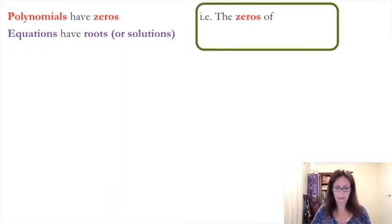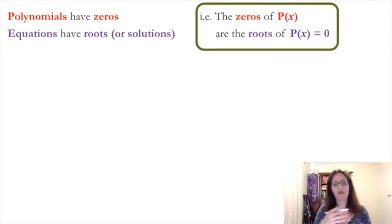So thinking about what a zero means, if something is a zero, what could that possibly mean it does? So the zeros of polynomial P(x) are the roots of what? Of the polynomial when it's equal to zero.